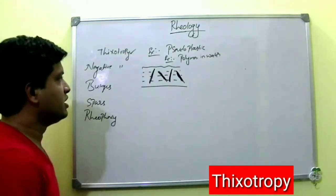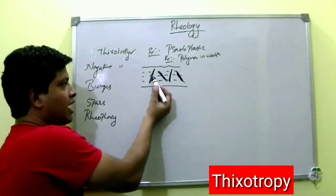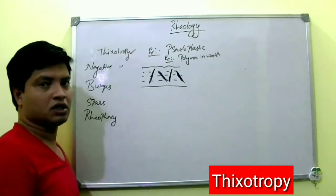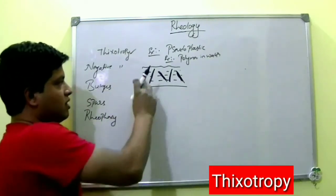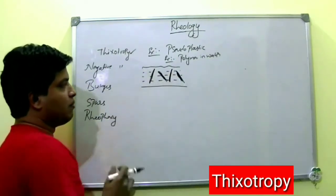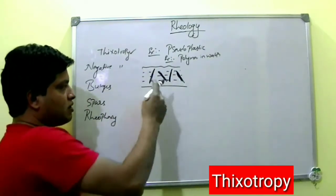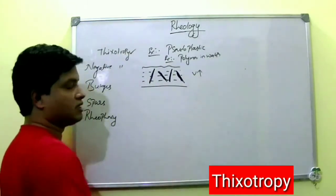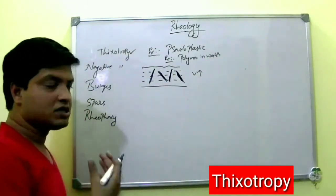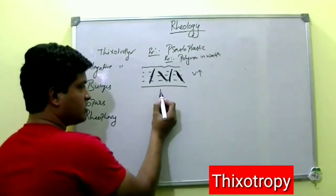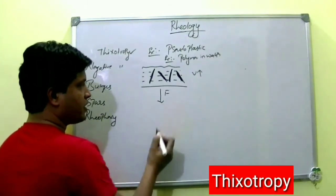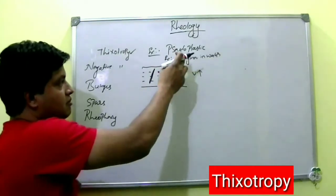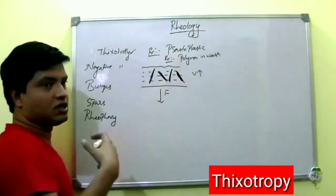Due to swelling, the viscosity of water increases. Initially, this polymer has multiple points of contact with the water, so the viscosity is high — the system is viscous. Now when you apply shear stress, this is a pseudoplastic system.